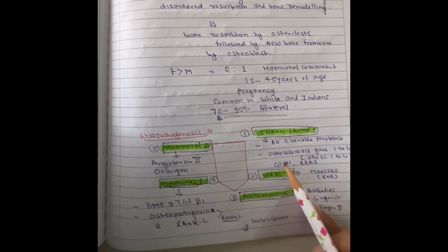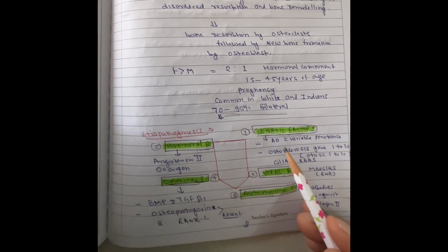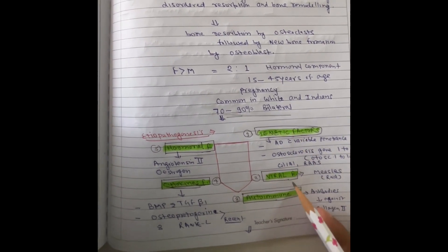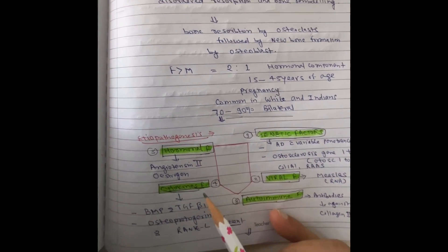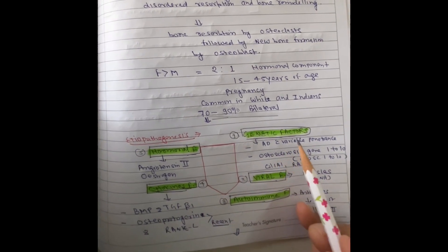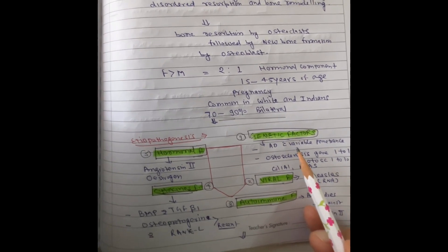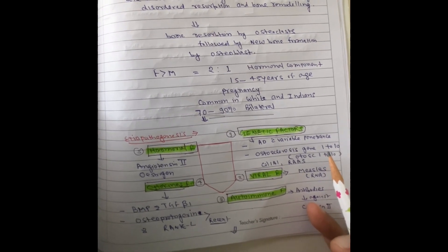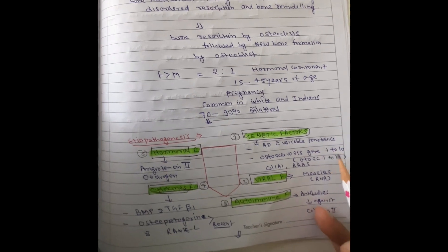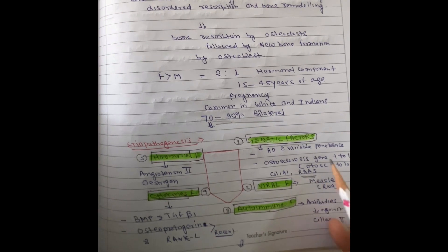Regarding etiopathogenesis, there are five factors suggested: genetic factor, viral factor, autoimmune factor, hormonal factor, and cytokines factor. Genetically, it is an autosomal dominant disease with variable penetrance, and about one to ten otosclerosis genes have been identified — these are called the OTSC gene and the COL1A1 gene — and the RASA gene has also been identified.